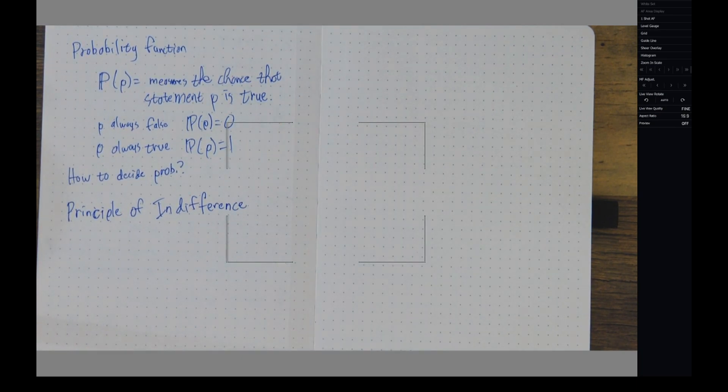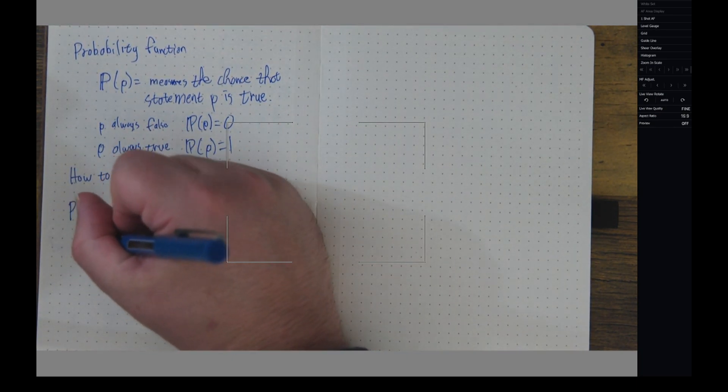And what the principle of indifference tells us is that if we know nothing about the outcome, then each outcome is equally likely.